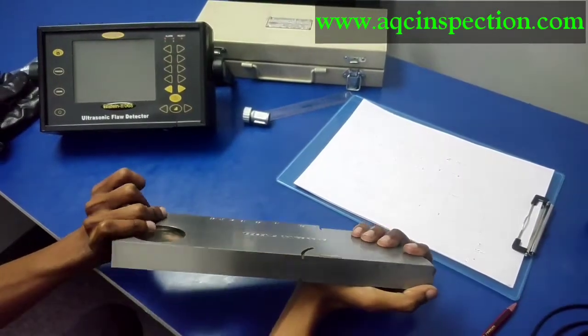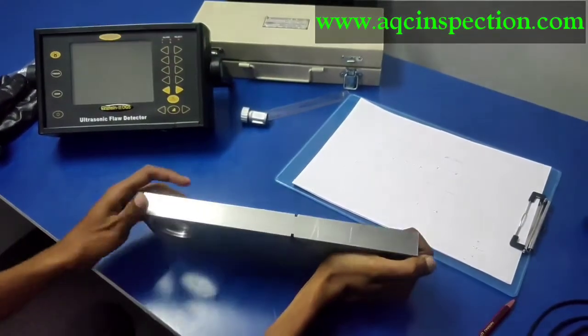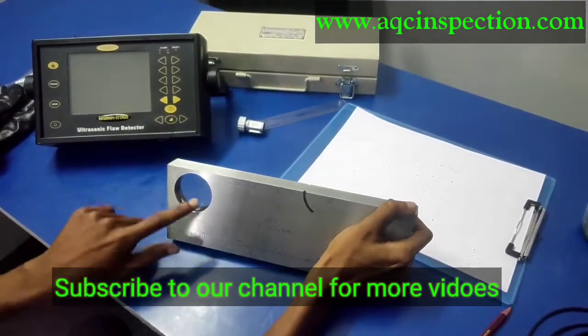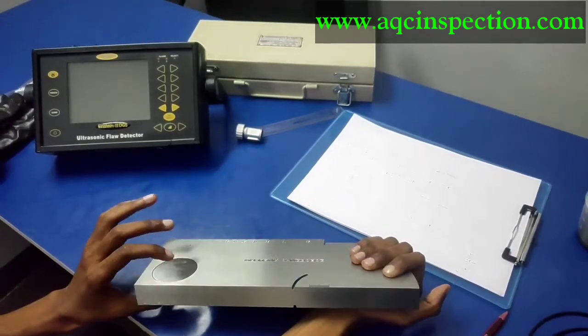This is the V1 block that you see here. This thickness is 25 mm and this total length is 300 mm. You can see glass here which is called plexiglass, it's 23 mm.